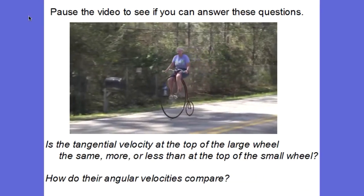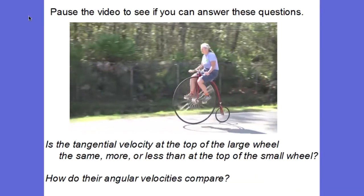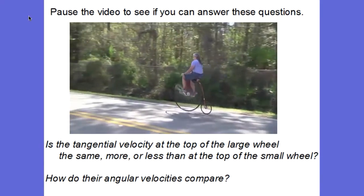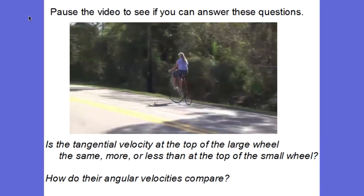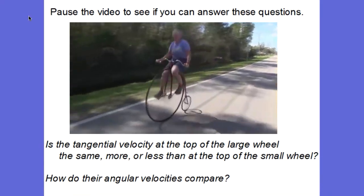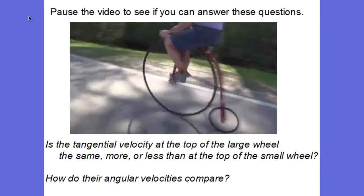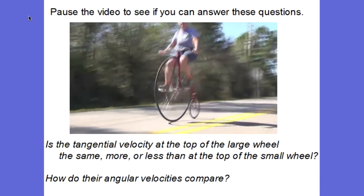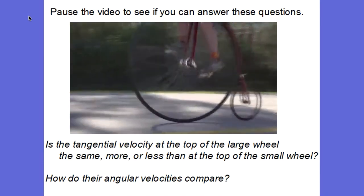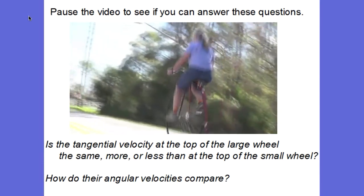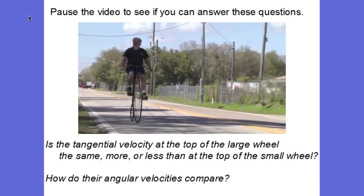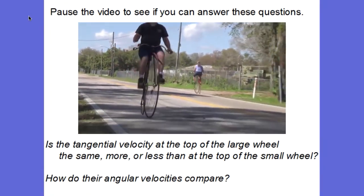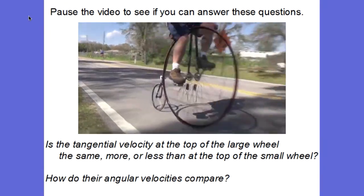In this short video of a person riding a bike with two different size wheels, consider: is the tangential velocity at the top of the large wheel the same, more, or less than that at the top of the small wheel? Also ask yourself how the angular velocities of the large and small wheels compare.